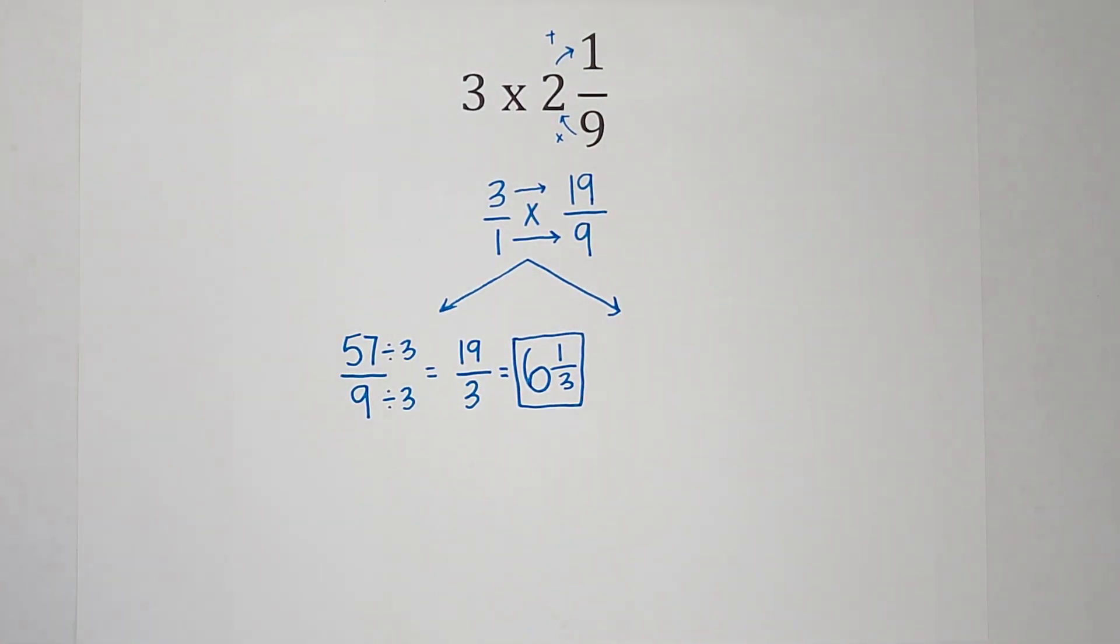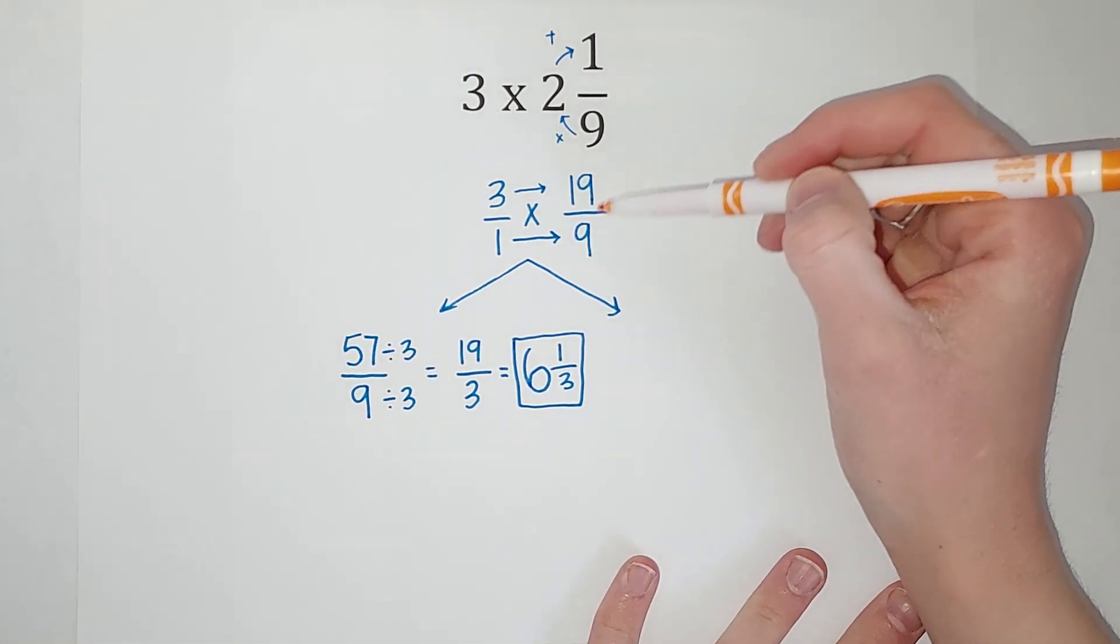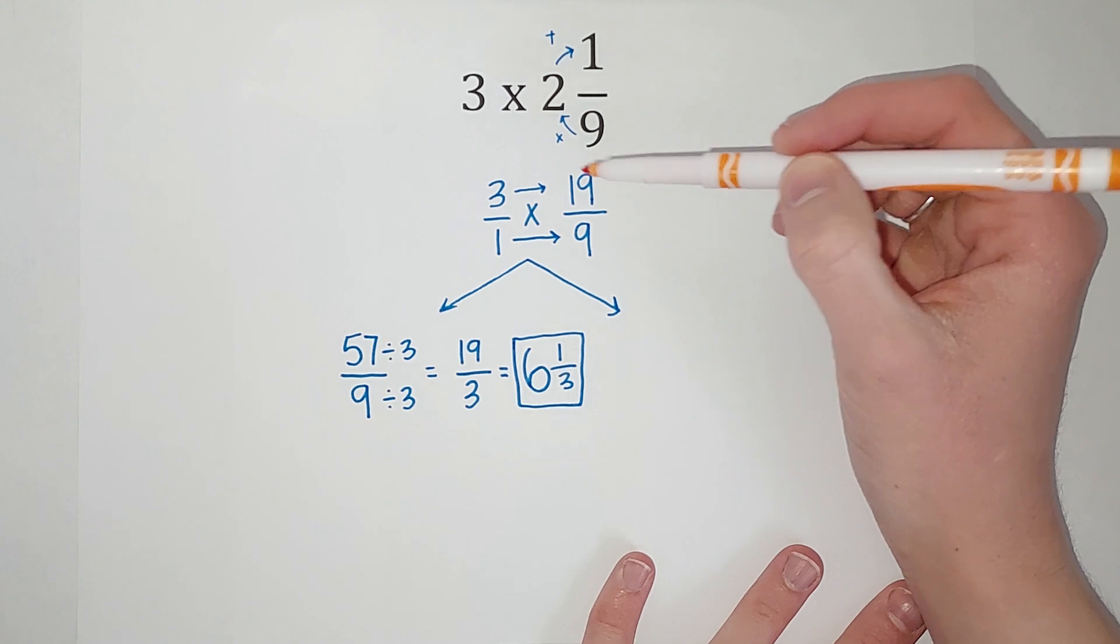The other way, a lot of times, is quicker. So before we multiply, we look at this.